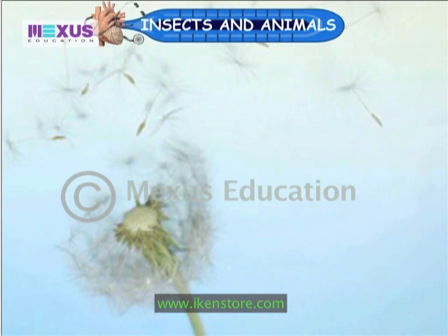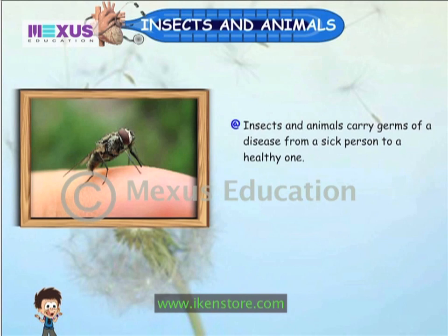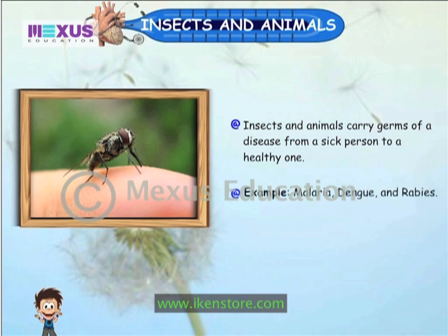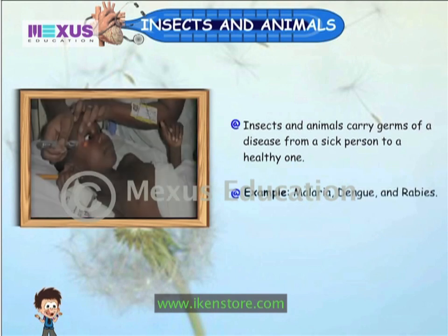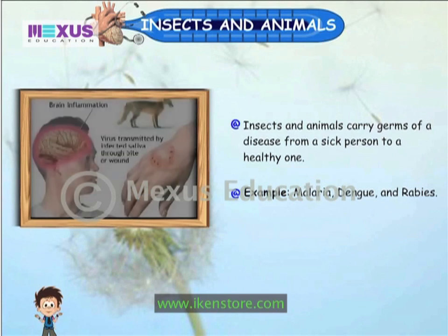Insects and Animals: Insects and animals carry germs of a disease from a sick person to a healthy one. For example, Malaria, Dengue and Rabies.